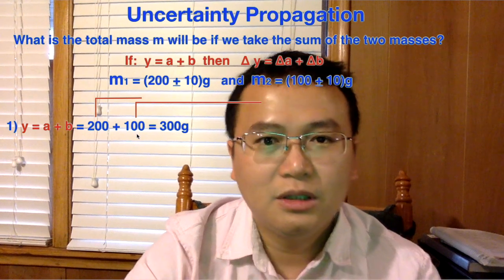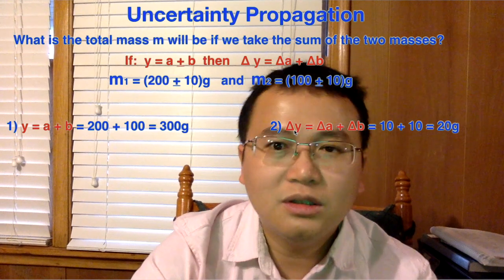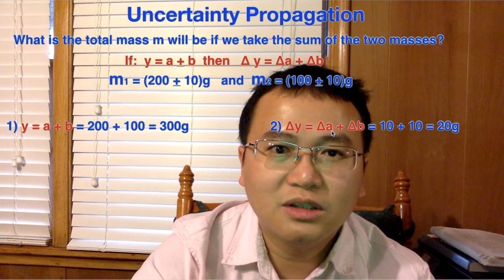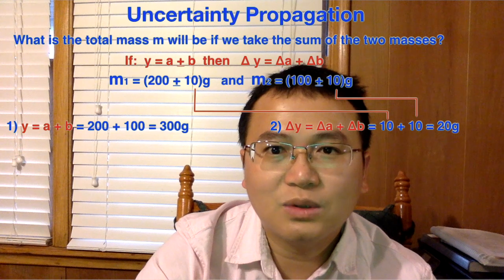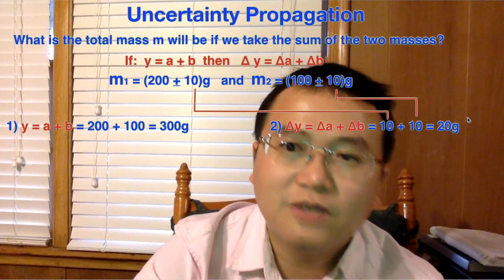Not too complicated. So the next thing we need to do is we need to include uncertainty. So the uncertainty for the calculated values is equal to uncertainty of A, which is 10 grams in this case, and also uncertainty of B is also 10 grams for mass 1 and mass 2. We add them together, giving us 20 grams.